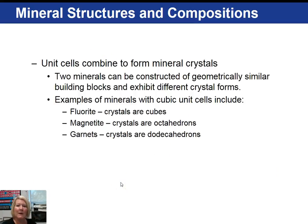Unit cells combine to form mineral crystals, so two minerals can be constructed of geometrically similar building blocks and yet have different crystal forms. Let's take a look at a few minerals with cubic unit cells: fluorite, whose crystals are cubes; magnetite, whose crystals are octahedrons; and garnets, whose crystals are dodecahedrons.